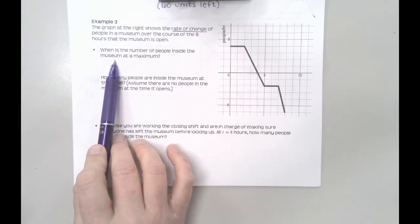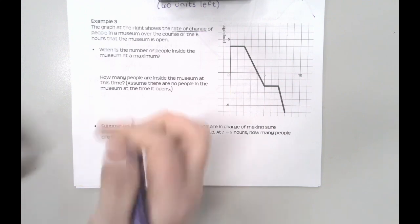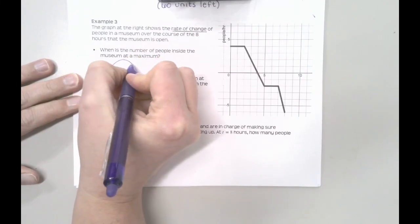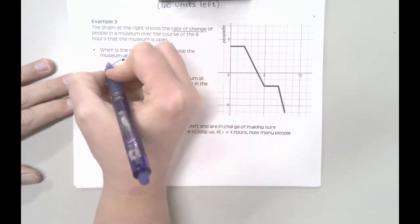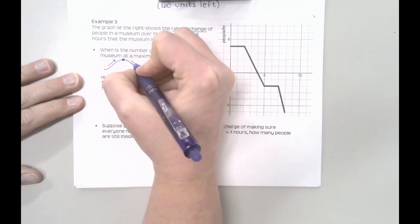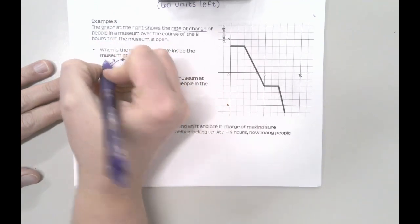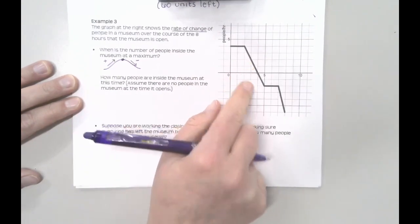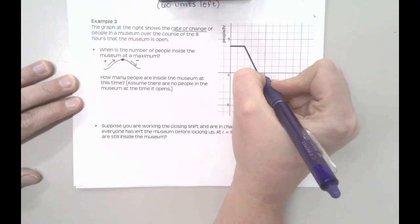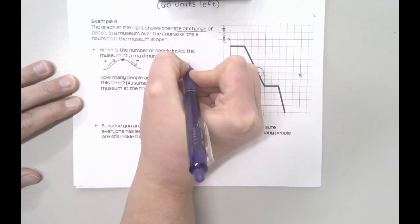This question — when is the number of people inside the museum at a maximum? A maximum occurs when our graph switches from increasing to decreasing. If I was to look at the graph of the number of people, I want to find when this occurs — and that would be when my graph switches from increasing to decreasing. Looking at the derivative graph, this is when my derivative would be positive, and this is when my derivative would be negative. I'm looking for when my derivative graph crosses from positive to negative — and that happens right here. So at t equals 4 hours, I know I at least have a local maximum.